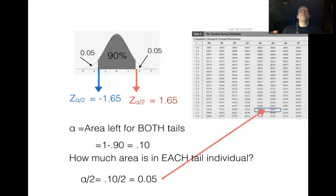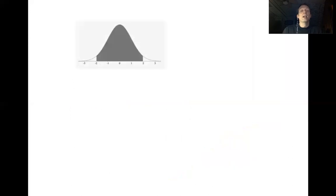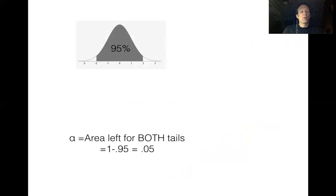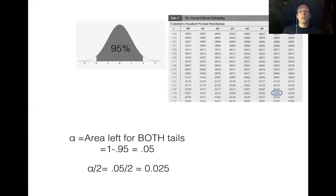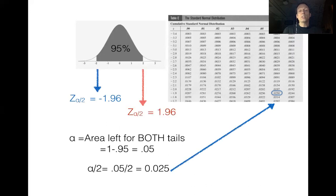Now the election is coming up sooner — three months away — so Joe Biden needs to be more accurate. He asks for 95% accuracy. We start the same way: calculate alpha, which is 5%. Each tail gets 2.5%. We locate 2.5% on the Z table and find the low side is negative 1.96 and the high side is positive 1.96.